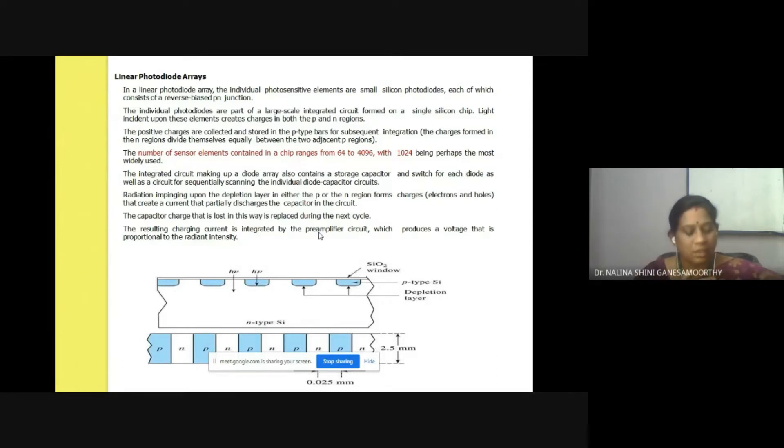Next comes the linear arrangement of these photodiodes, called linear photodiode arrays. The reverse biased PN junction diodes are fabricated on a single silicon chip. The number of sensing elements in a chip can vary from 64 to 4096. The radiation impinging on this array of photodiodes produces an output voltage which can be pre-amplified and read on a meter.